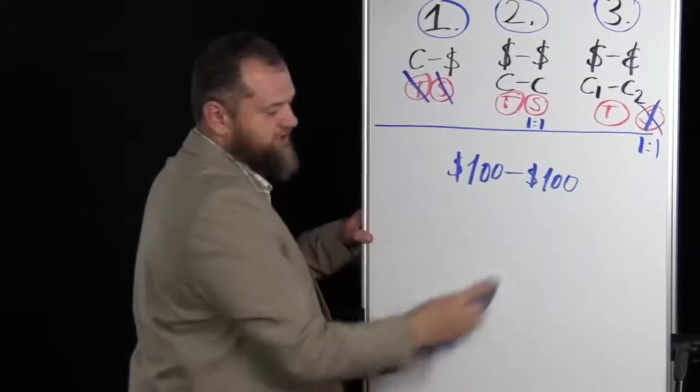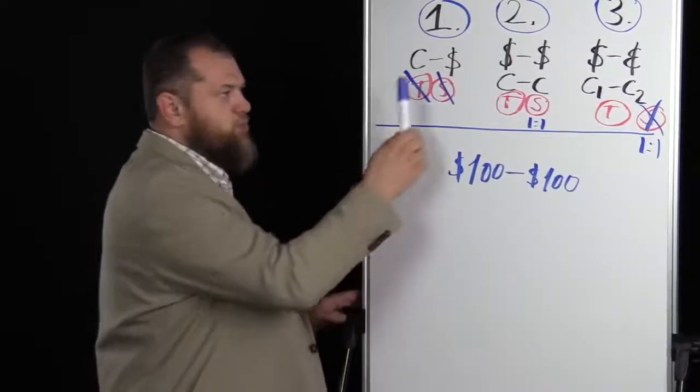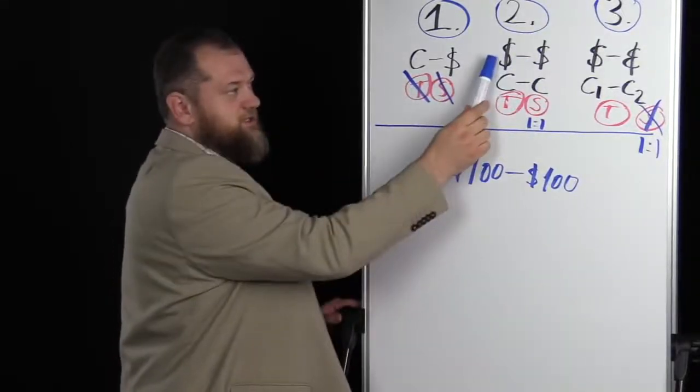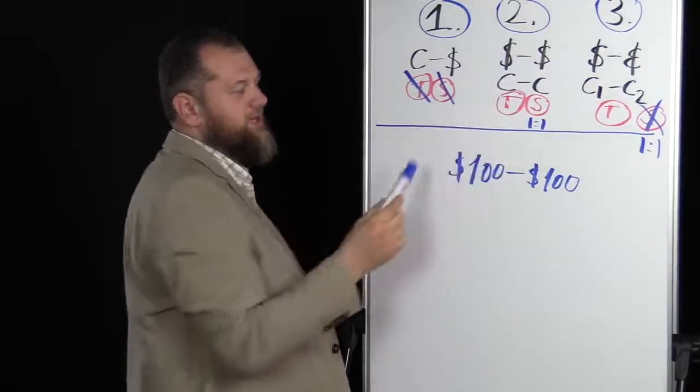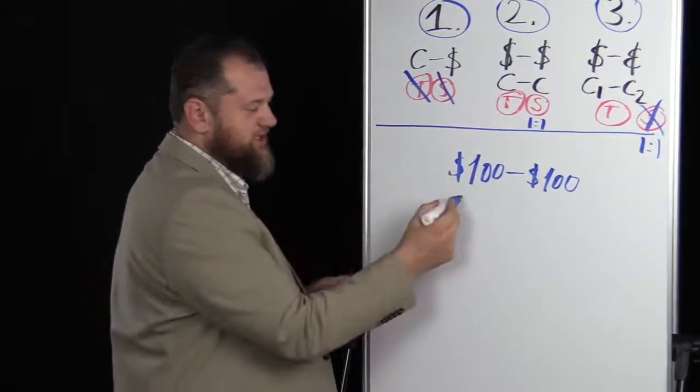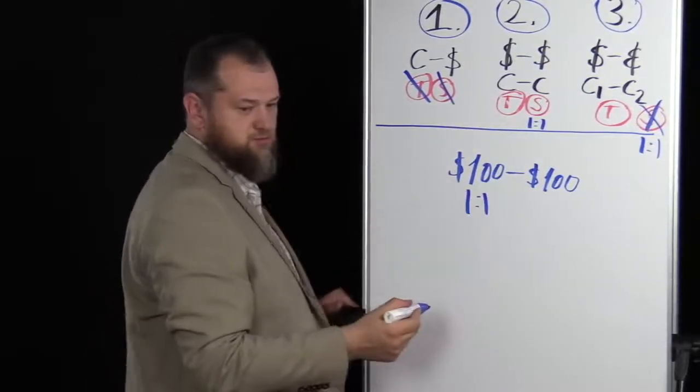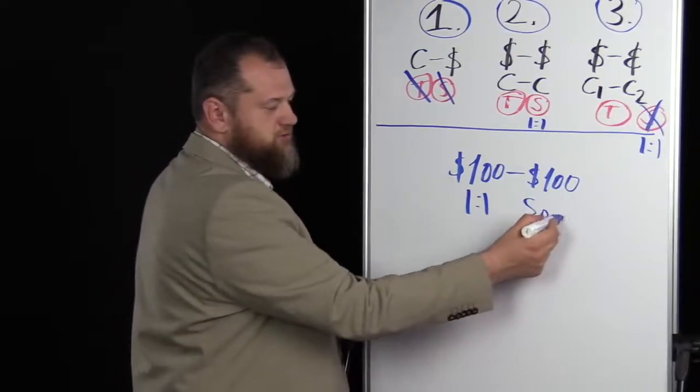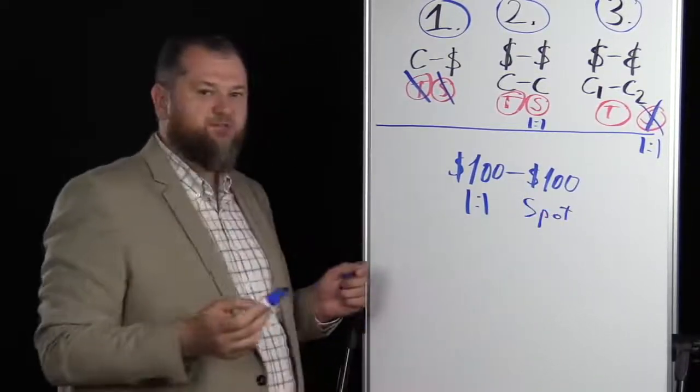Sometimes people ask me, when I give them these examples, why does Islam put the rules here that when exchanging money for money, the rules are that it must be one-to-one, no surplus, and it must be spot. Why do we have these rules in Islam?